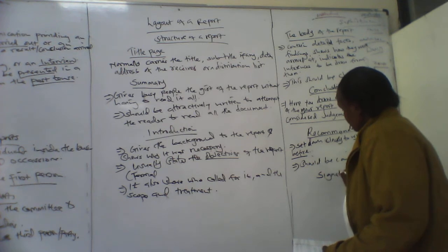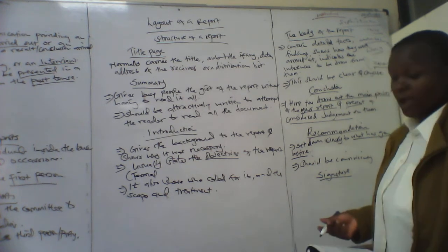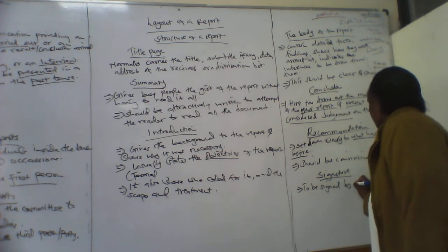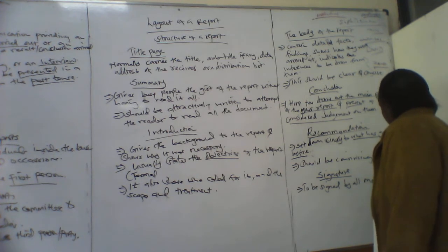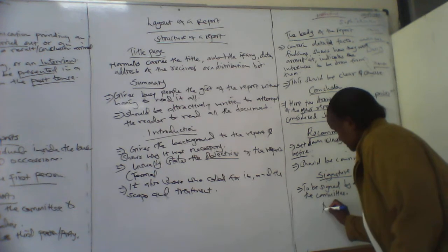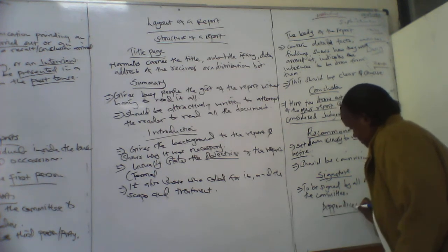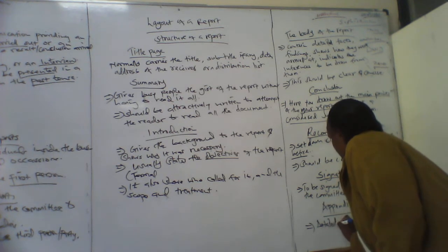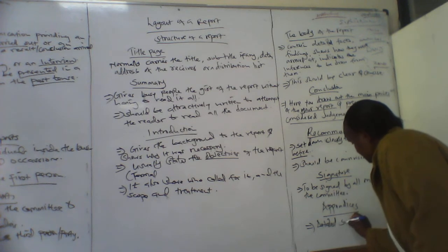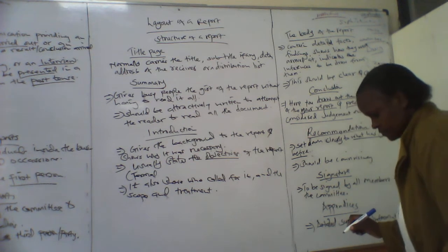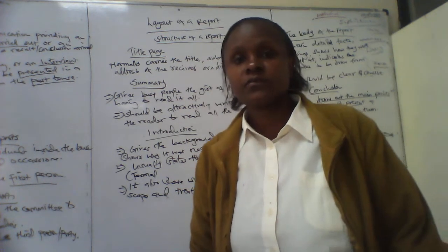Then the report should have a signature, to be signed by all members of the committee. Finally, we have the appendices. These are the detailed supporting information which the readers may need. That is the format of the report.